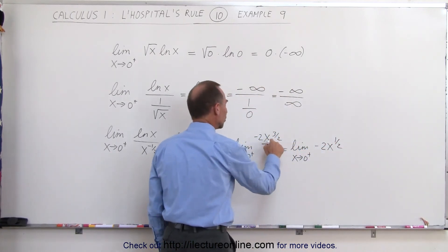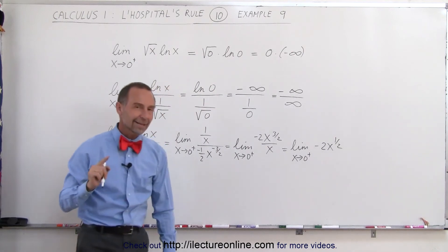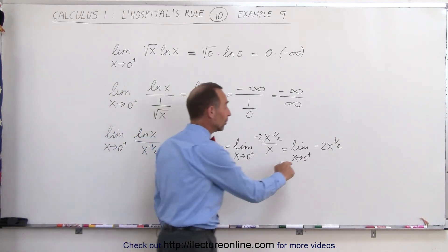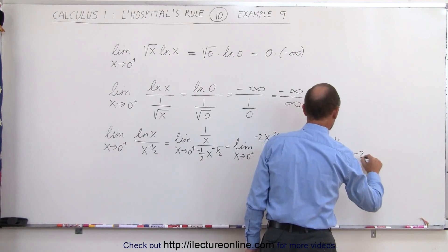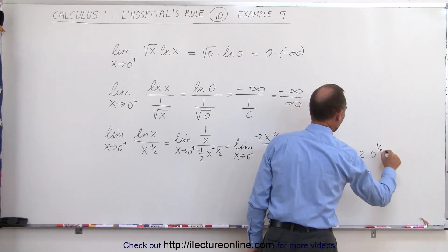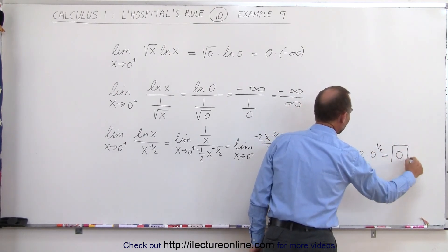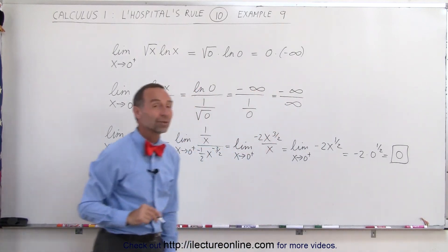This becomes the limit as x approaches 0 from above of minus 2x to the 1 half, because I divided the x into the numerator. Now we can apply the limit when x goes to 0. This becomes minus 2 times 0 to the 1 half, which is equal to 0. And that is the limit of this particular function.